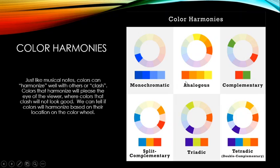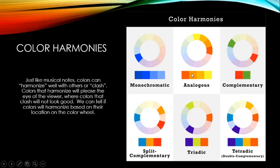An analogous color strategy groups colors that are next to each other on the color wheel. For example, a primary yellow and a secondary orange, with blends of colors in between. You can have as few as two adjacent colors or add more in between — it's flexible to your needs.